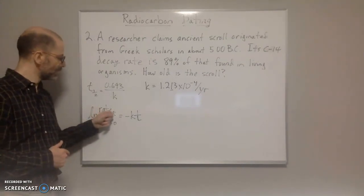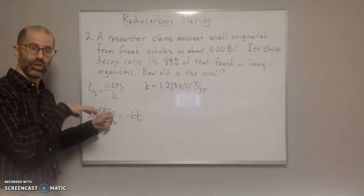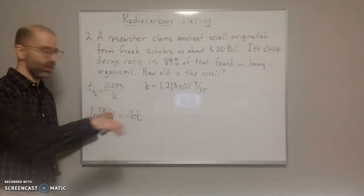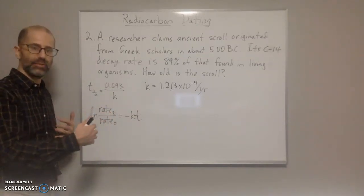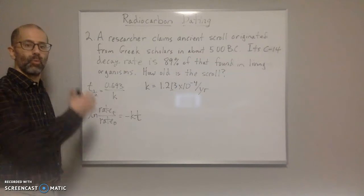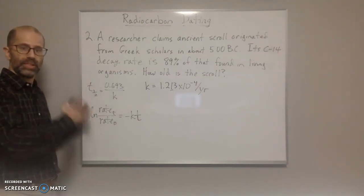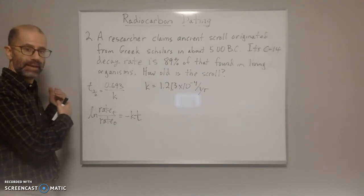Rate t is today for the object that we're interested in. Rate at t right now is going to be the age of the thing from the time it died, because when it died, its carbon-14 decay rate was the same back then.